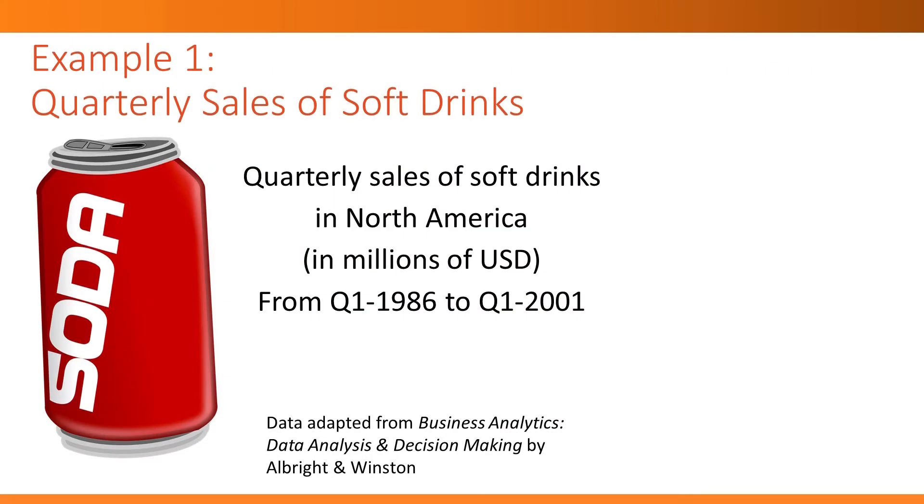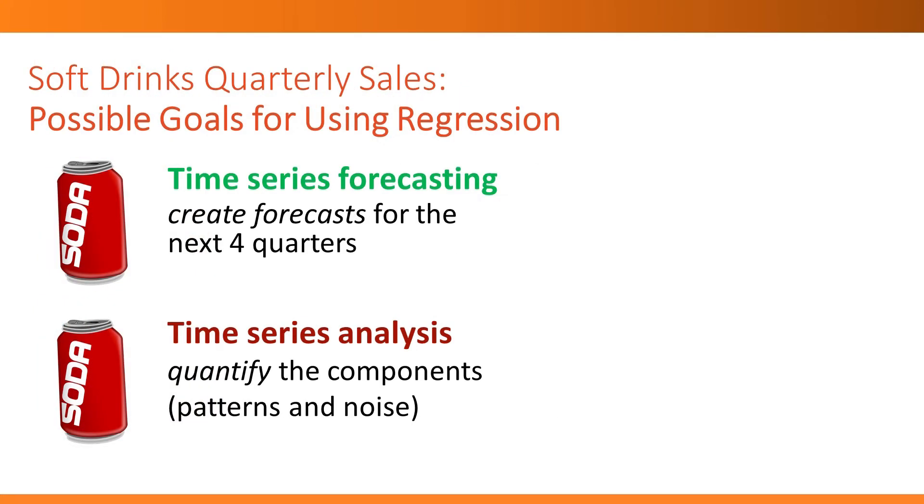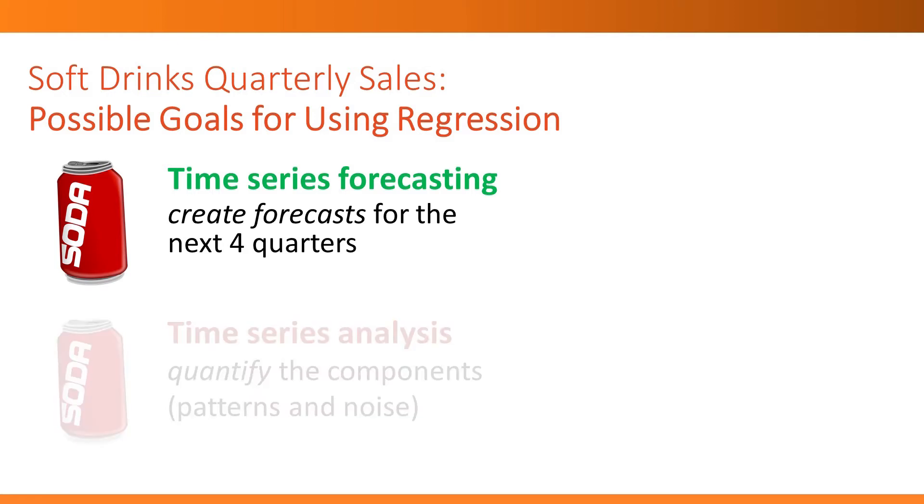Let's recall our earlier example of sales of soft drinks. We had quarterly data, measuring millions of dollars every quarter from quarter one of 1986 to quarter one of 2001. We might have two different goals for the analysis. One is a forecasting goal, time series forecasting, where we're trying to create forecasts for the next four quarters. A different type of goal would be time series analysis, where we're trying to simply quantify the components, and that would be a descriptive goal. Linear regression would be useful for both of these goals. But here, we're going to concentrate on the first goal of forecasting.